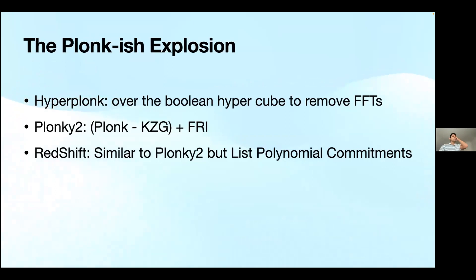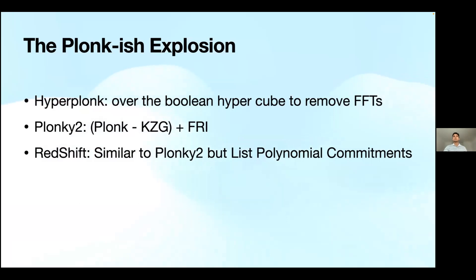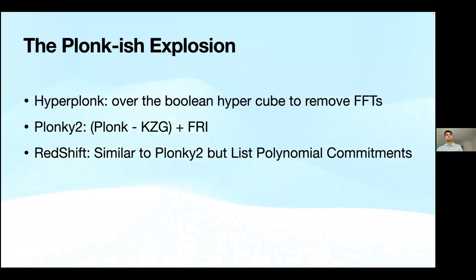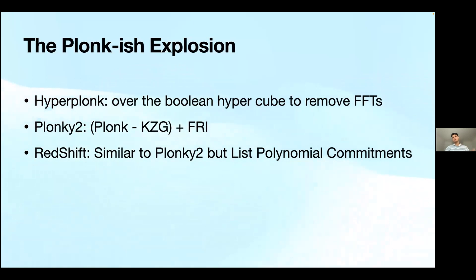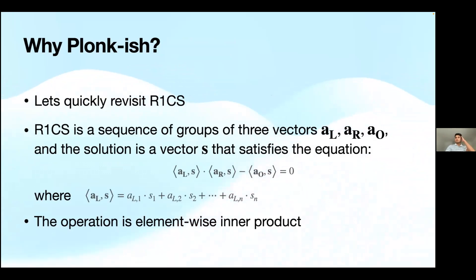There have been a few recent papers and schemes. Plonky2 is something that Polygon is planning to use in one of their ZK VMs. HyperPlonk is a paper which is being used by Espresso Labs — HyperPlonk operates over the boolean hypercube. There are a few differences in each one of them made for particular reasons, and we'll come back to these at a later point.